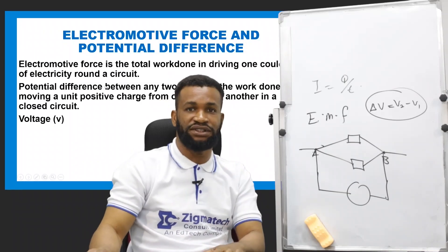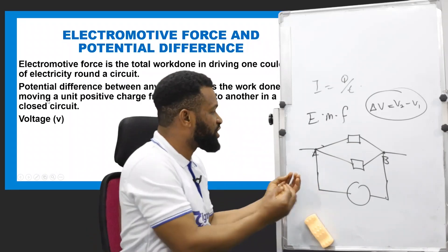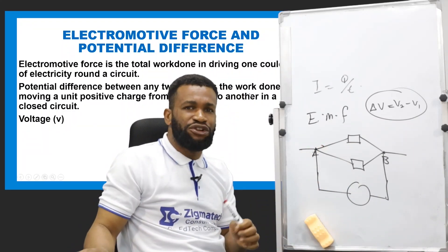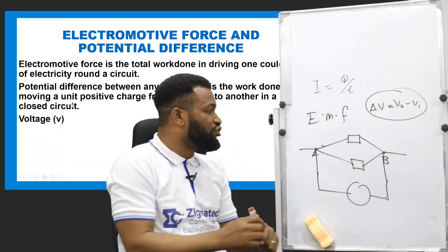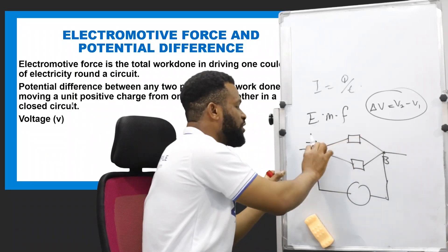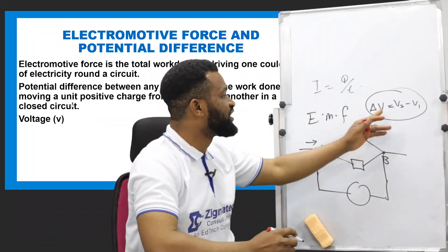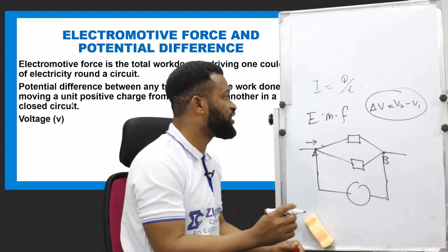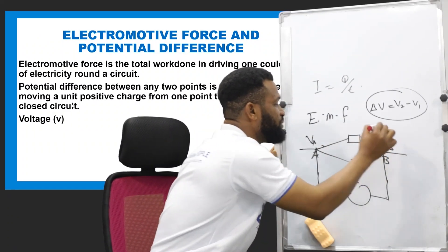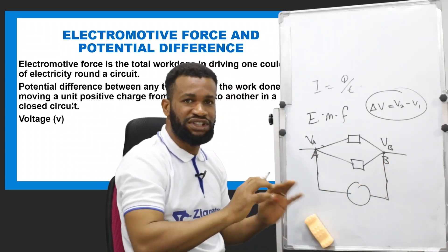The question is: what is potential difference? Potential difference between any two points is the work done in moving a unit charge — that means moving one coulomb of charge from point A to another point B in a closed circuit. There must be work done, because if there is no work done — no energy supplied by the battery in pushing the charge from one point to another — then we are not going to have what is called voltage. Voltage is the change in potential difference between two points.